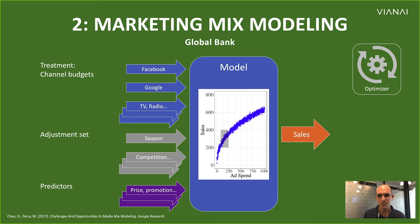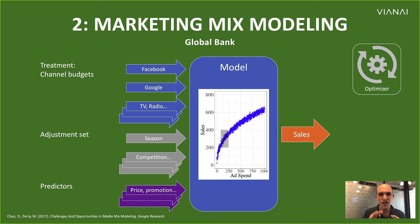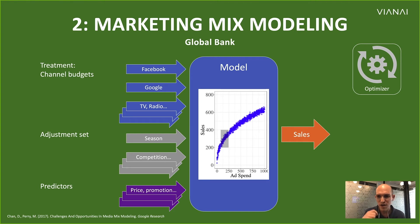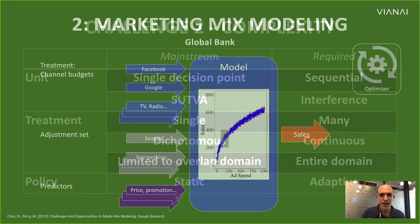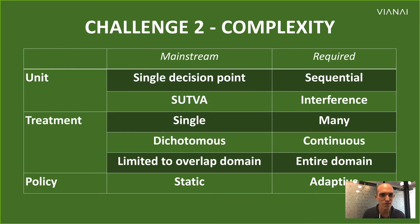There are quite a few challenges in building these types of models. One is that there are multiple actions and the actions are continuous — achieving positivity or overlap is highly non-trivial. Another challenge is adaptivity: these channels may behave similarly over many weeks, but suddenly one week could be pretty different than others, so the model needs to adapt. There are also challenges around optimization: how do you account for uncertainty in your model, and how do you take actions and explore to mitigate that uncertainty?